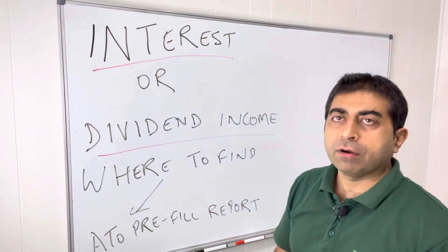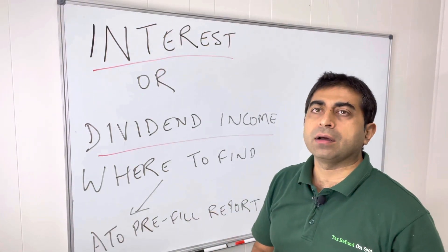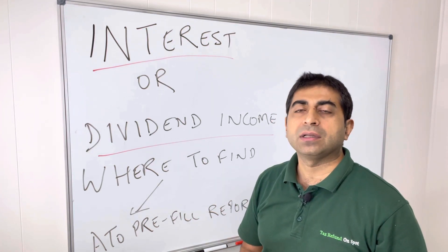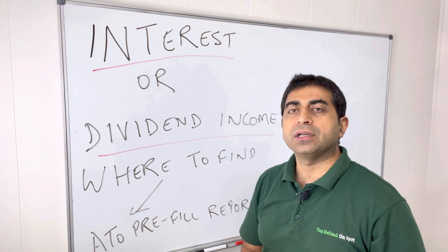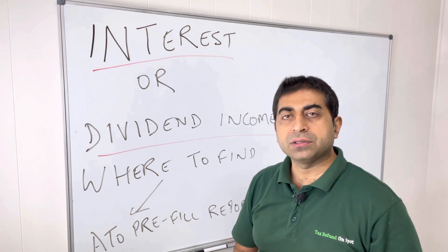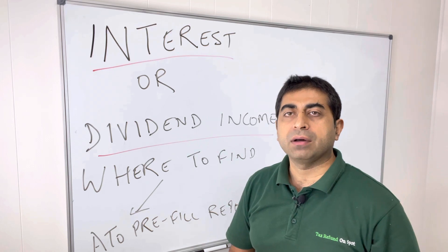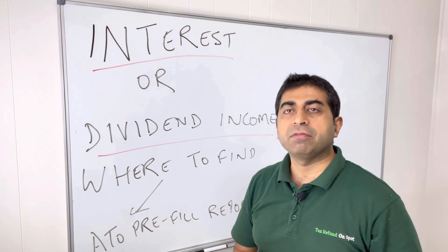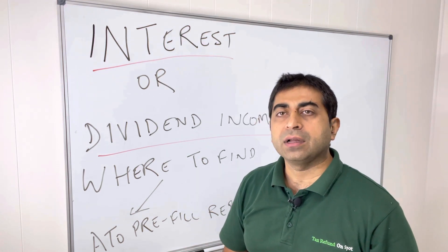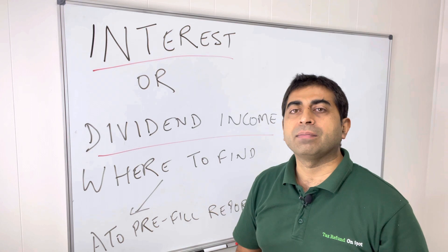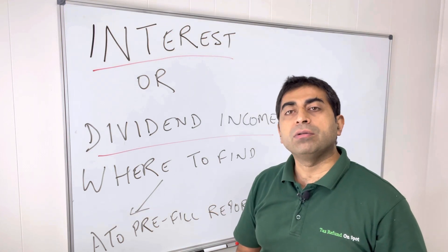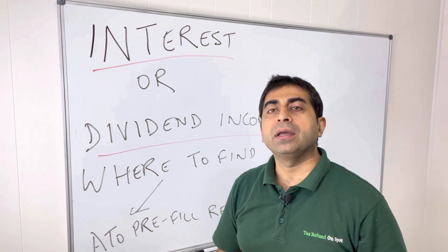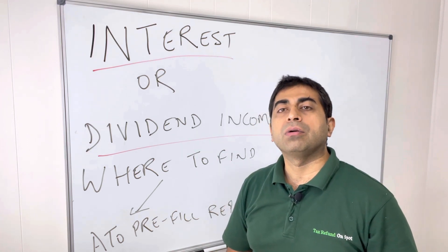Hello everyone. The topic for today is interest or dividend income — where to find it. People who have money in term deposits in banks, or who invest money in shares, receive interest from the bank on term deposits and online savers. Companies also pay dividends, sometimes franked, sometimes unfranked. At the end of the year, they have to declare their interest income and dividend income — but where do they find that information?